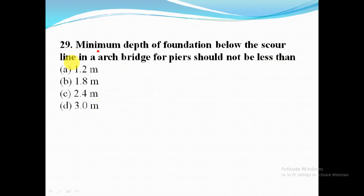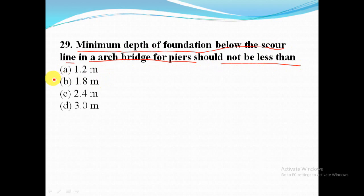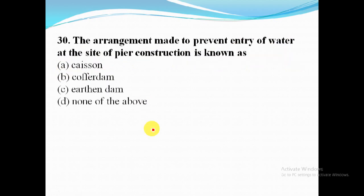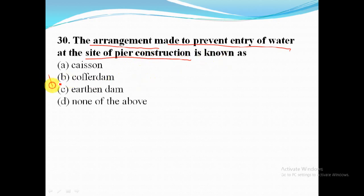Minimum depth of foundation below the scour line in an arch bridge for piers should not be less than 1.8 meter. The arrangement made to prevent entry of water at the site of pier construction is known as a cofferdam.